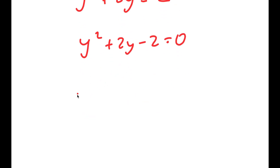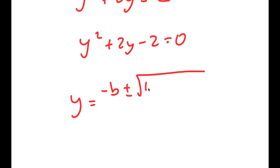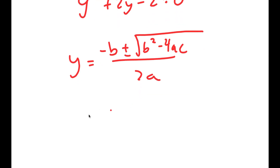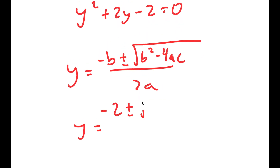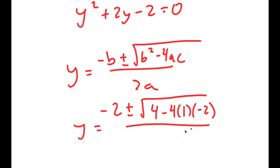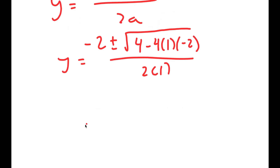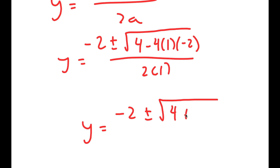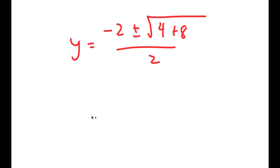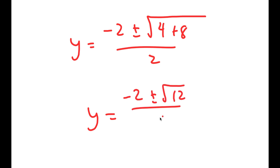So now to solve this, I'm going to use the quadratic formula, which is negative b plus or minus the square root of b squared minus 4ac, all over 2a. So in this case, I get negative 2 plus or minus the square root of 4 minus 4 times 1 times negative 2, all over 2 times 1. And this is equal to negative 2 plus or minus the square root of 4 plus 8 over 2, which is equal to negative 2 plus or minus the square root of 12 over 2.